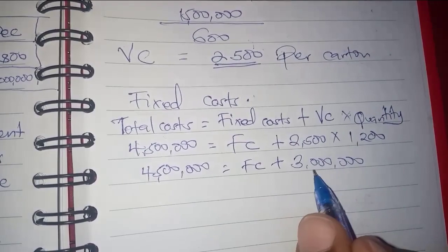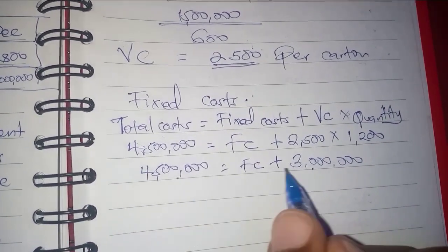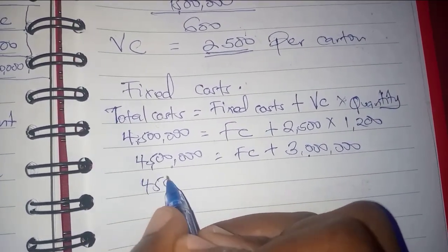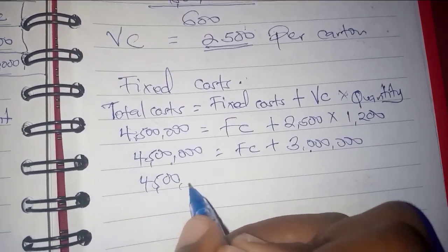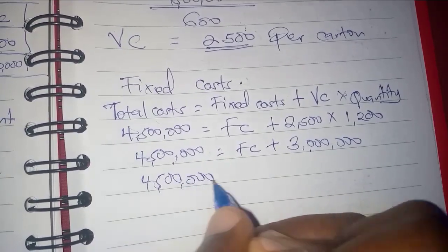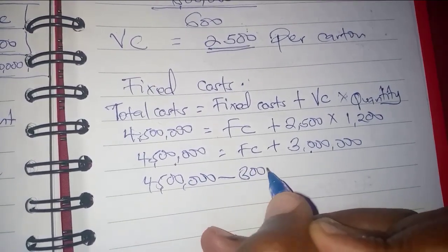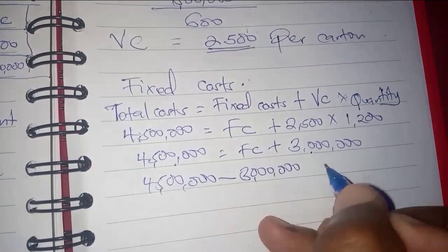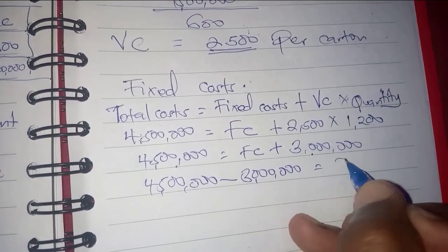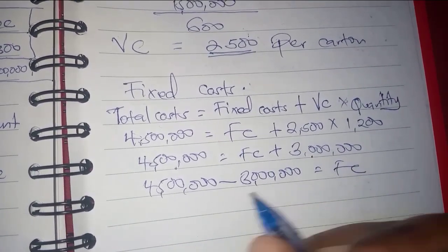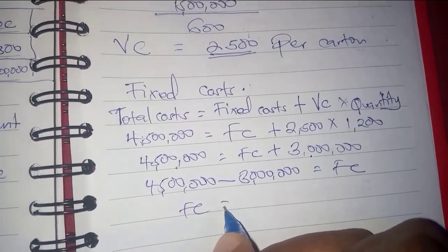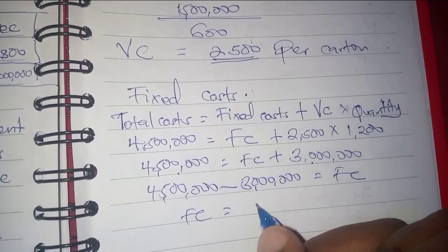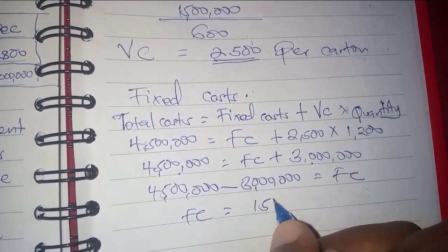So this will come to this side, which gives us 4.5 minus 3M equals fixed costs. So the fixed cost is 1.5.